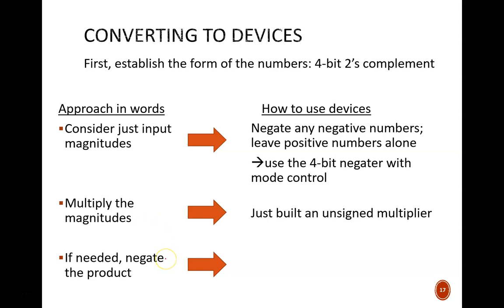Recall that it uses one input signal to either negate the input or to apply no change. Next step is to multiply the magnitudes. In the previous lesson, we built an unsigned multiplier. That seems like the right tool for the job. Finally, if needed, the circuit must negate the product from the unsigned multiplier. Again, this can be accomplished with a negator with mode control. But it's a little fuzzy right now how we can determine the mode based on the input bits. Let's put a pin in that problem for now.